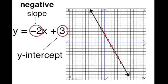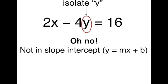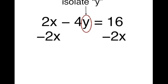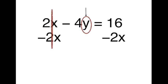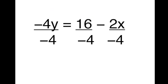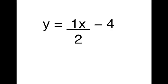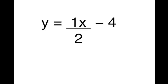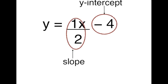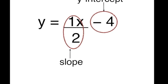Got to show you a line going down. What happens if it's not in slope-intercept? Isolate y, because we're not there yet. 2x minus 4y equals 16. Subtract 2x — you knew the routine. Negative 4y equals 16 minus 2x. What's the next step? Divide both sides by negative 4. Getting close now. y equals one-half x minus 4. Yeah, that's the y-intercept. Slope on top: 1 over 2. Now the problem's finished right on cue.